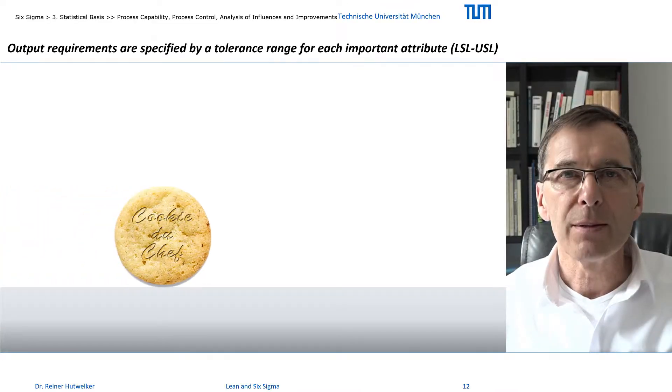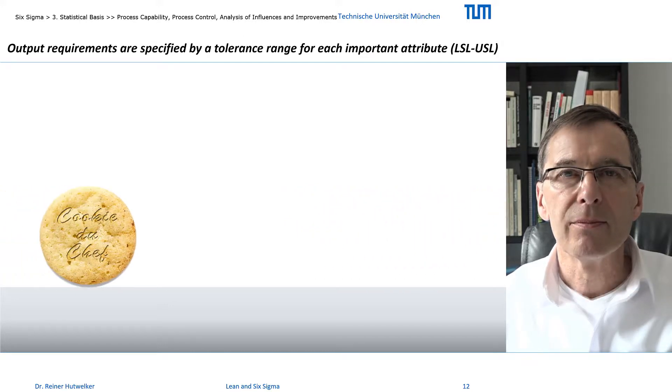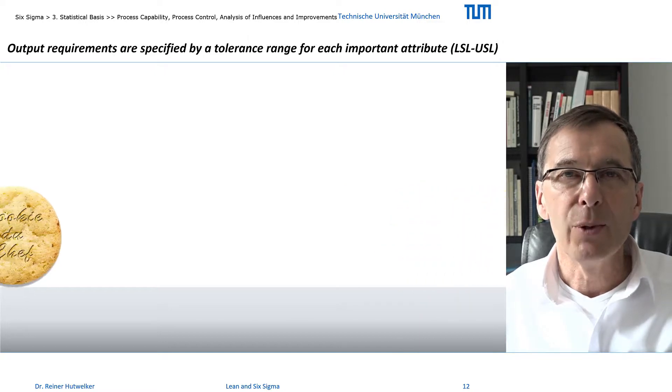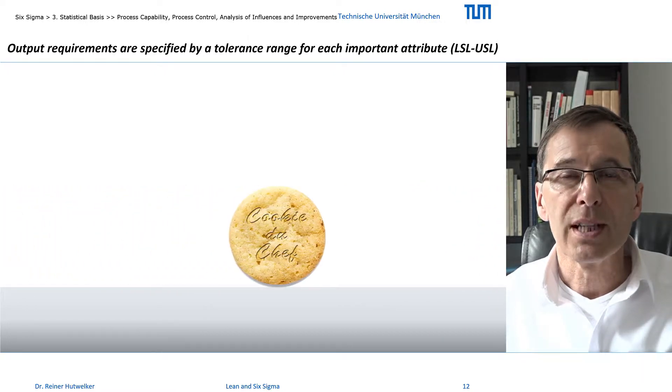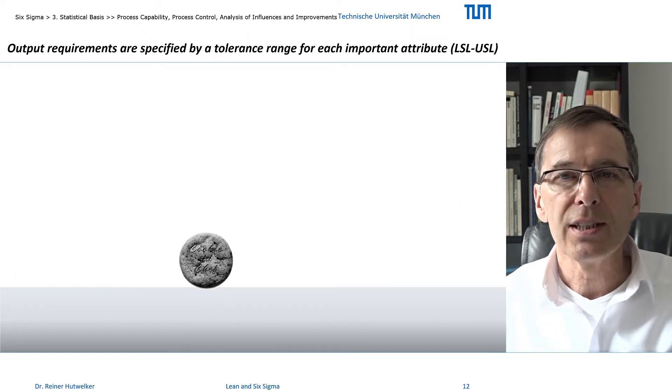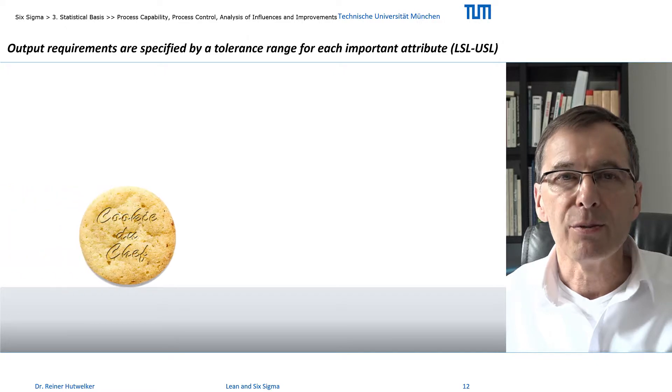You know that the term Six Sigma also indicates a specific level of process capability. At this level only 3.4 errors are expected in one million outputs. Process capability generally reflects the performance of a process to meet the requirements of an important attribute of the output.